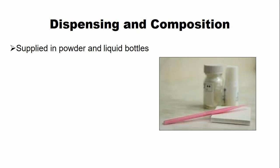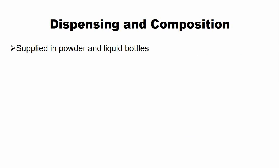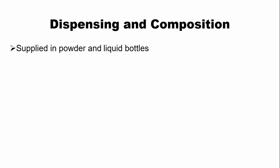Now, dispensing and composition. Silicate cement is supplied as powder and liquid bottles. The powder comprises mainly of silicate glass particles, and the liquid comprises of phosphoric acid.